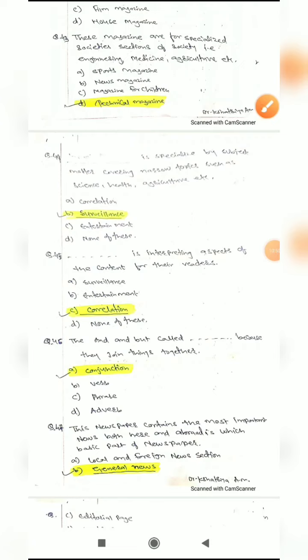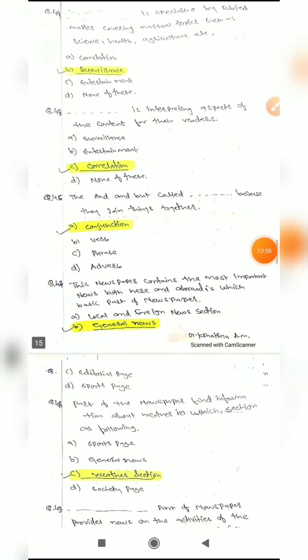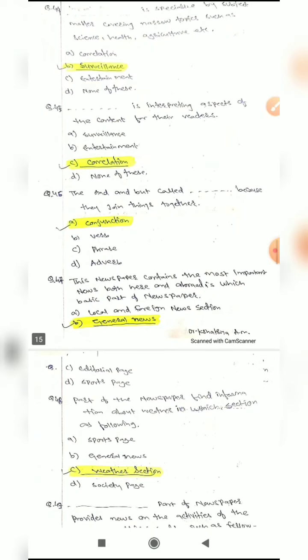Question 45: Blank is interpreting aspects of the content for their readers. Options are: surveillance, entertainment, correlation, or none of these. The correct answer is correlation.